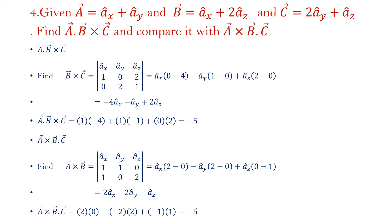Next, Problem 4. Given A is equal to ax plus ay, B is equal to ax plus 2az, and C is equal to 2ay plus az. Find A dot (B cross C) and compare it with (A cross B) dot C. This expression is known as the scalar triple product. We will first find A dot (B cross C), so we perform the cross operation first.